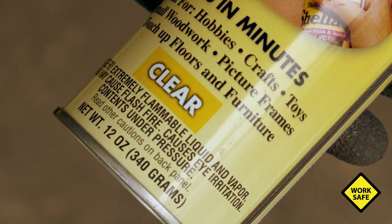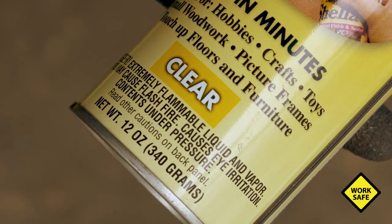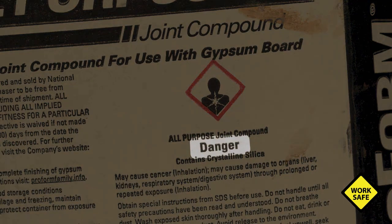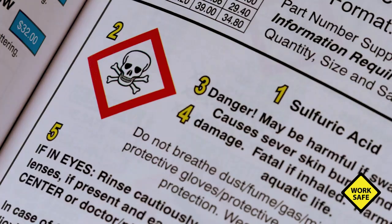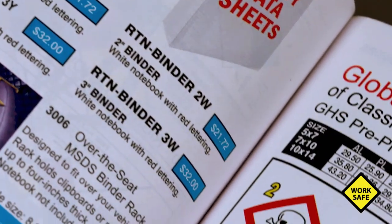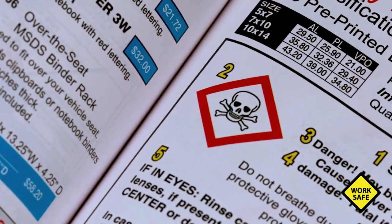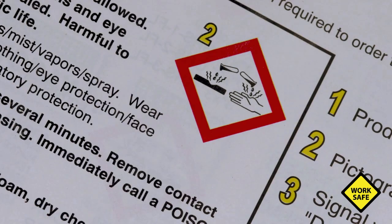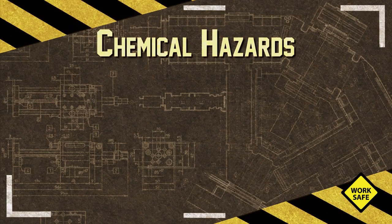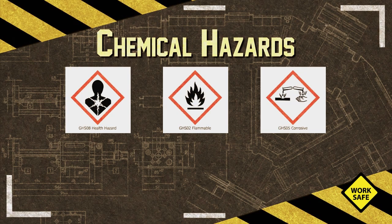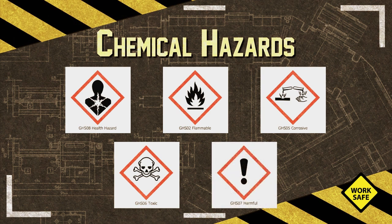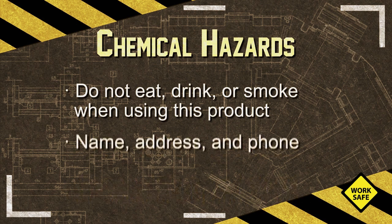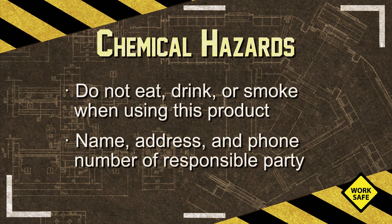Product manufacturers are required to provide labels on all shipped containers with information, including product identifier or product name; signal words like danger or warning; hazard statements like fatal if inhaled; hazard pictograms that alert users of the chemical hazards to which they may be exposed. Each pictogram consists of a symbol on a white background framed within a red border and represents a distinct hazard such as a health hazard, flammable, corrosive, toxic, and irritant. Precautionary statements like do not eat, drink, or smoke when using this product. And lastly, the name, address, and phone number of the responsible party.